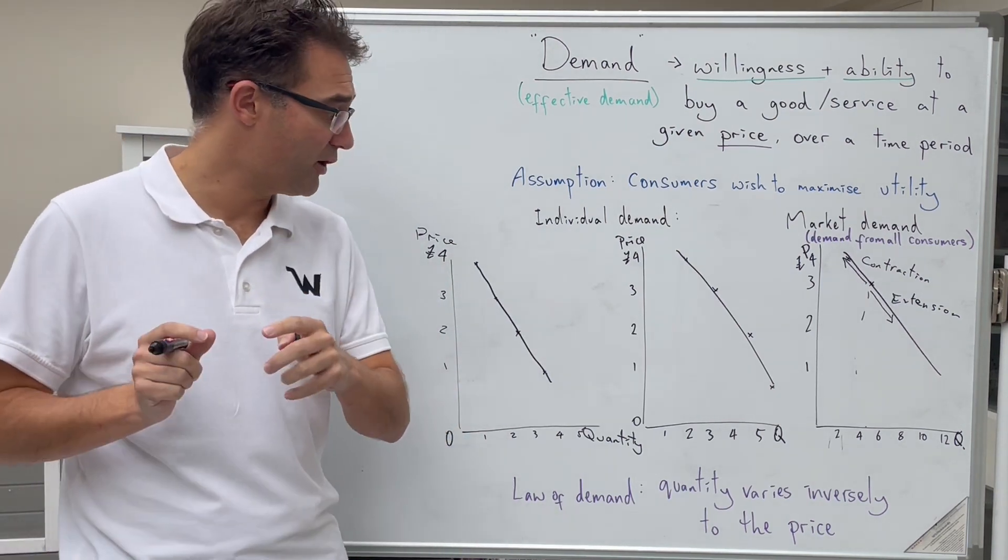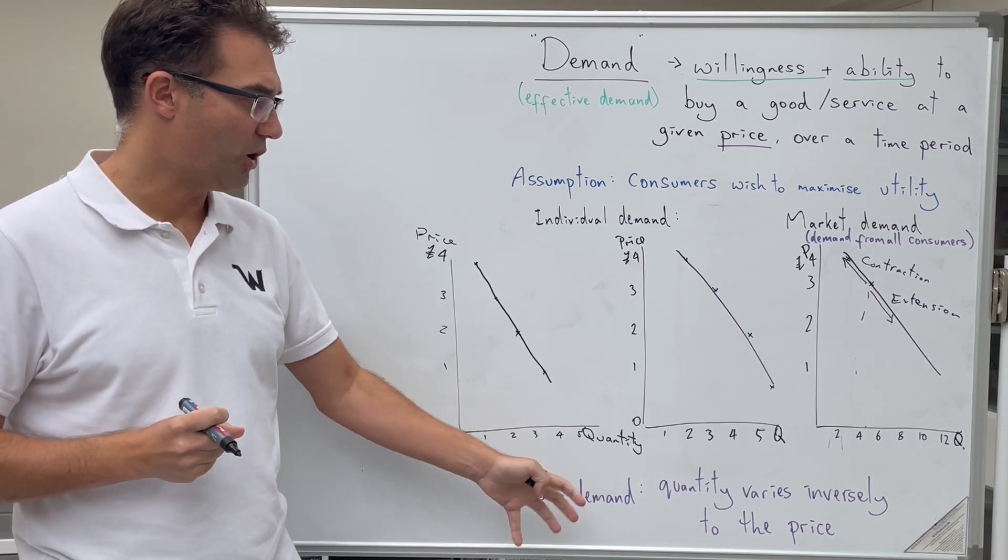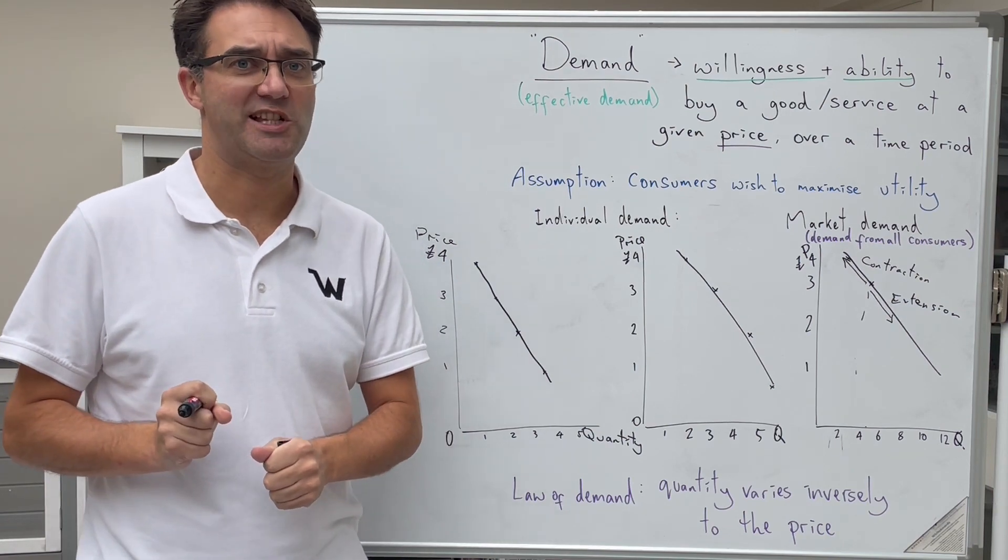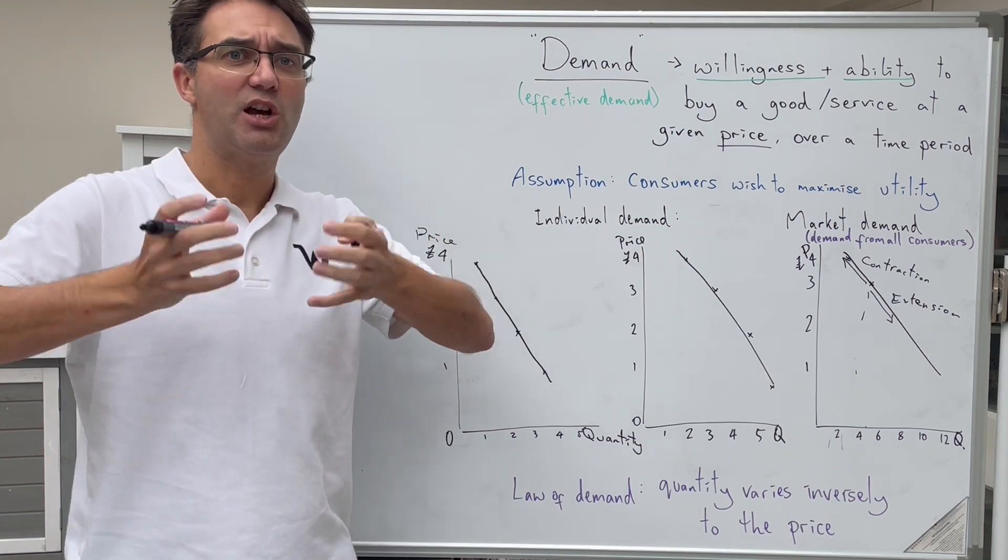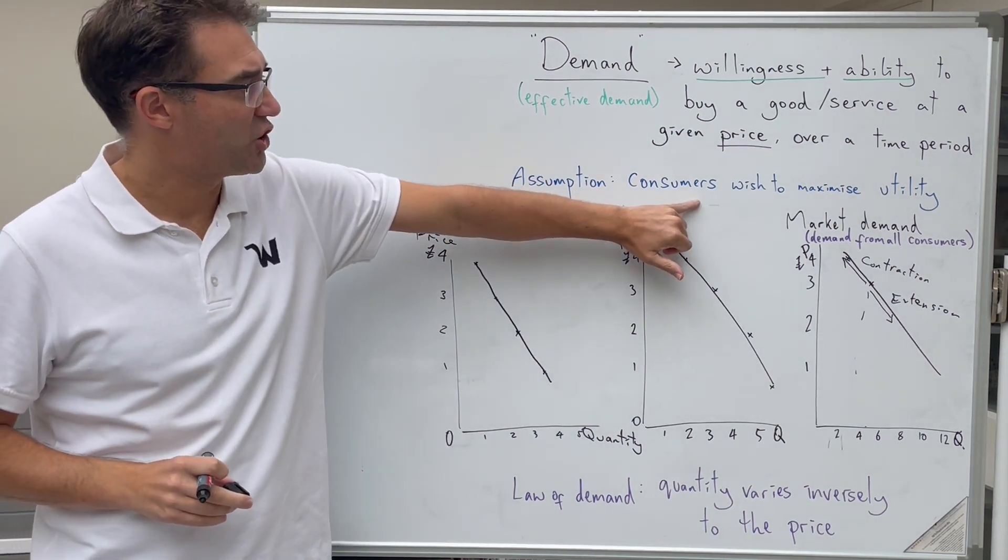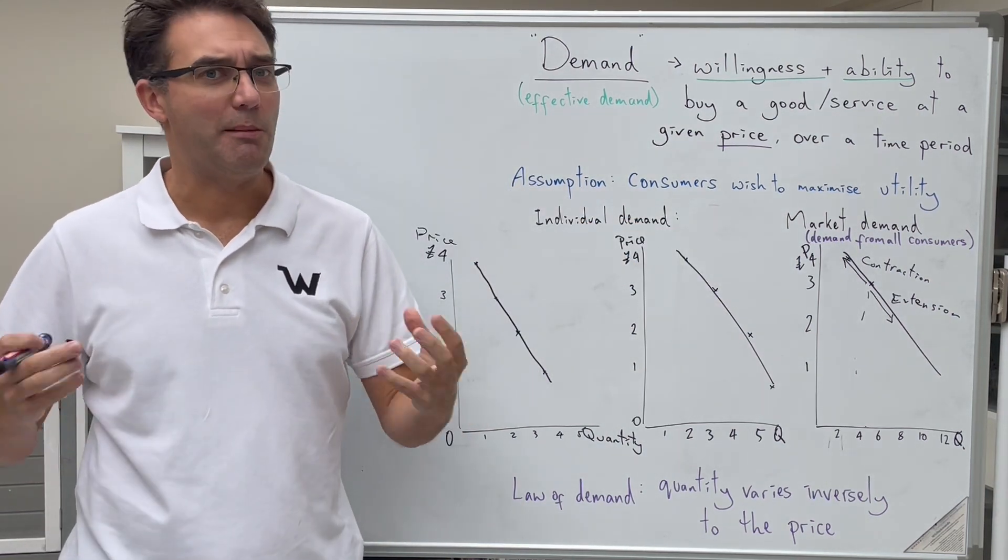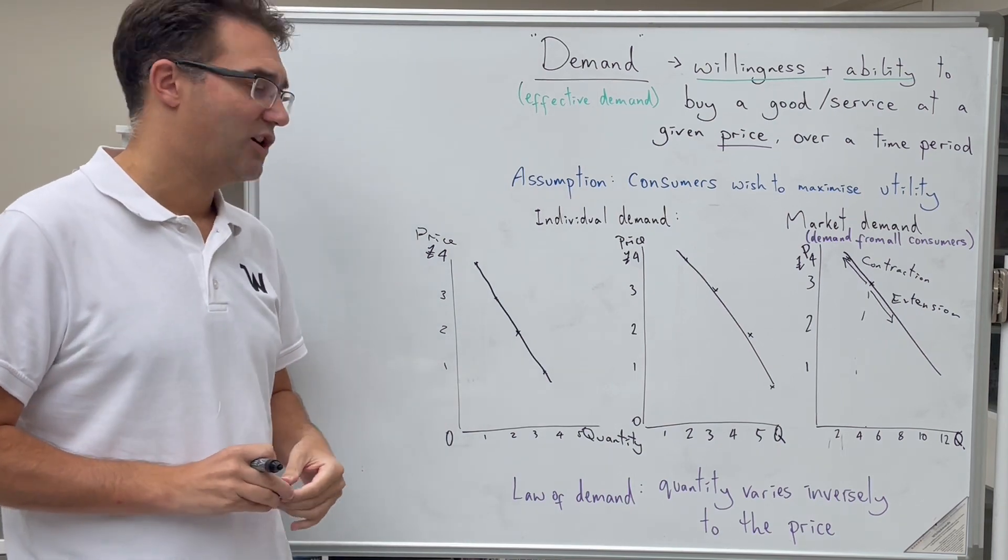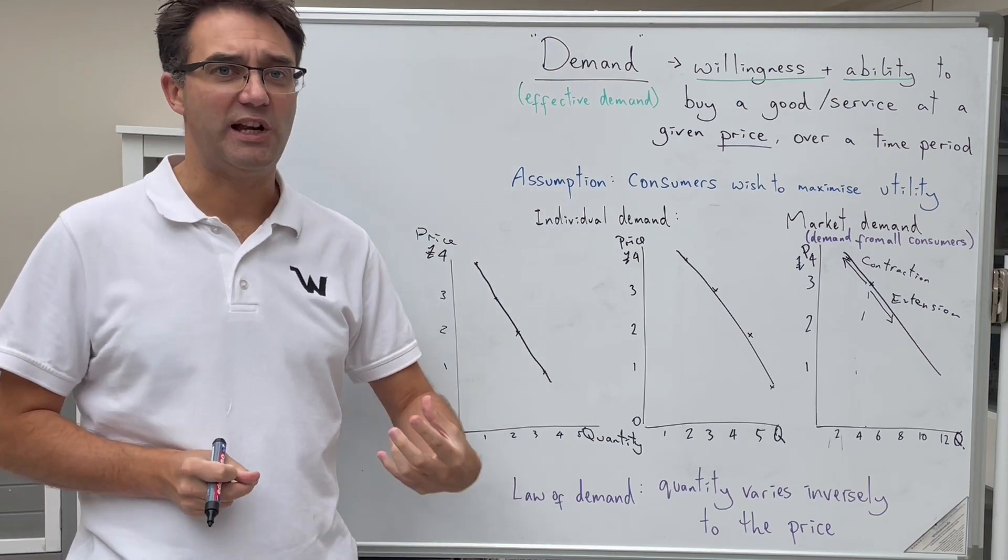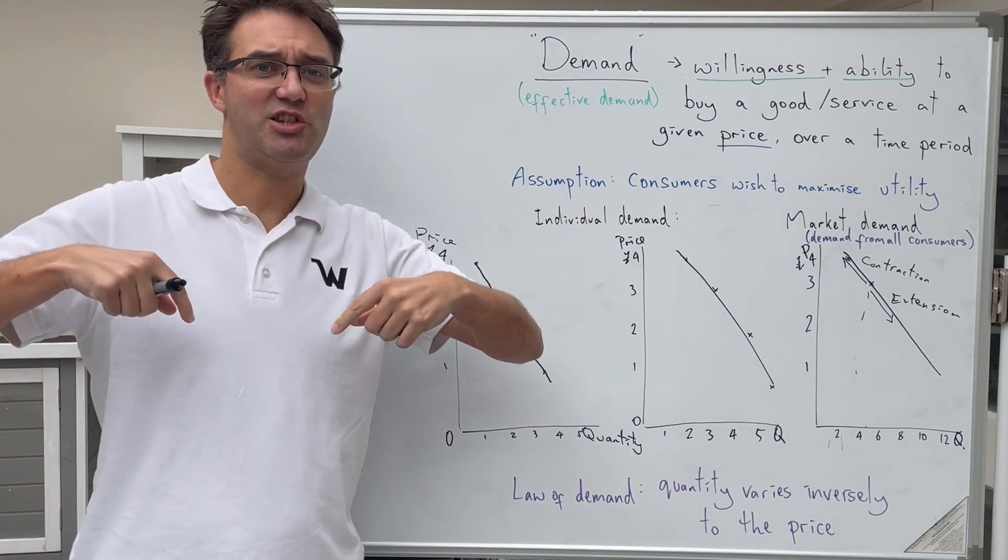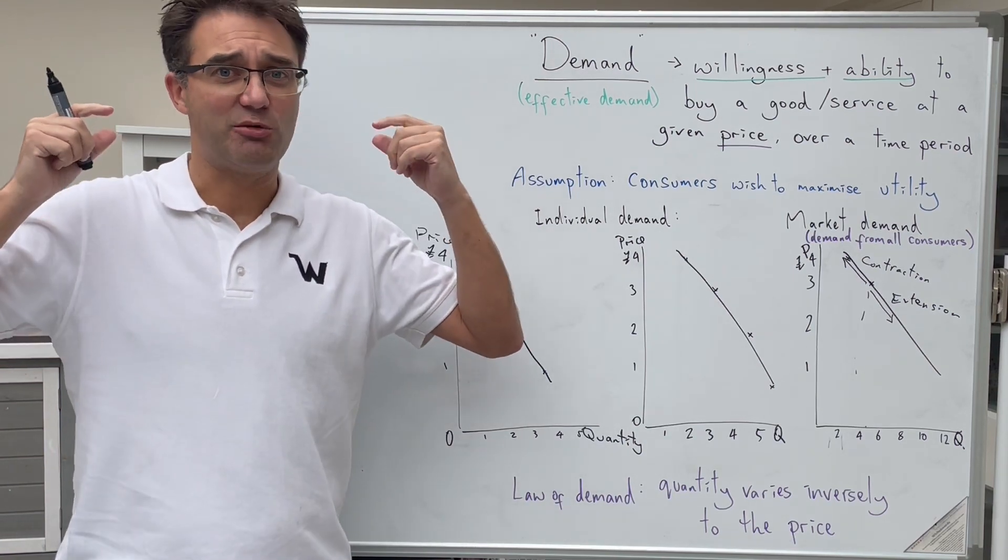Final takeaway from this lesson folks, the law of demand. And all this states is that the quantity demanded varies inversely to the price. And this is something that is eminently logical. If something has a higher price, we're less likely to buy it because assuming we're aiming to maximize our utility, we will get a better deal, more utility from spending our money on a different good or service. Price goes up, the amount we consume will fall. If the price goes down, the amount we consume or are willing to purchase will increase. Please check out the next video, hit like, subscribe, leave a comment if you'd like, and I'll see you in the next one.